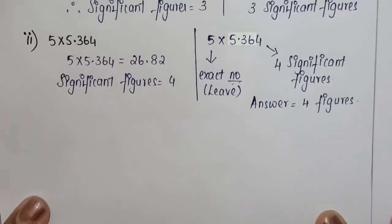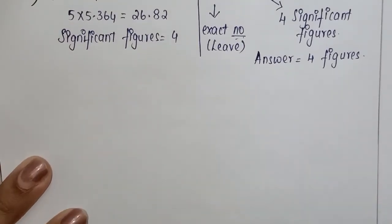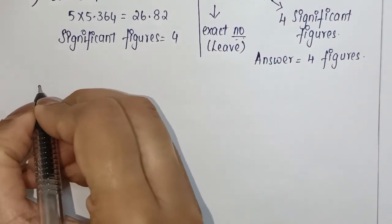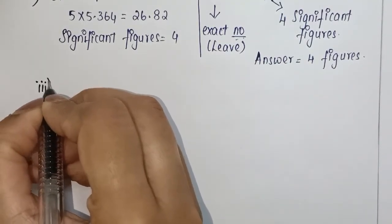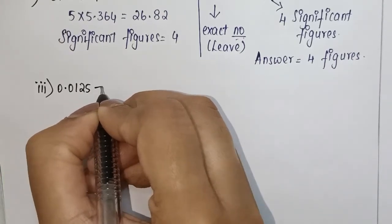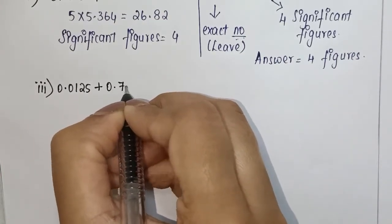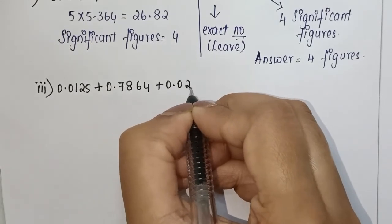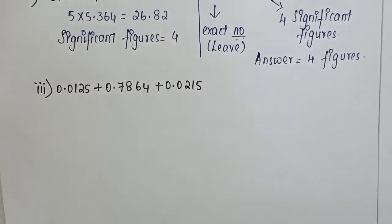Now in the last question, which is the third one, we can write the question: 0.0125 + 0.7864 + 0.0215.